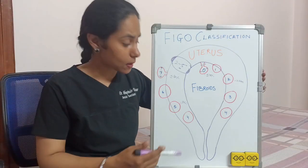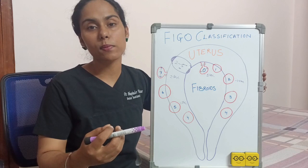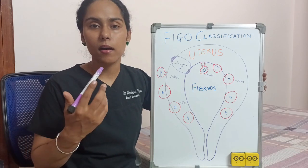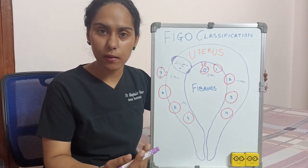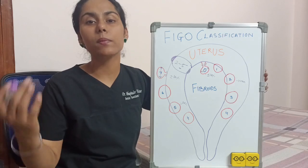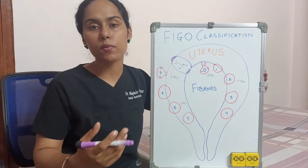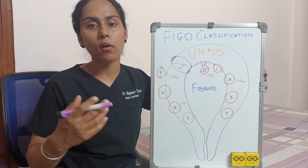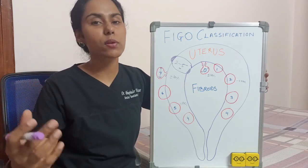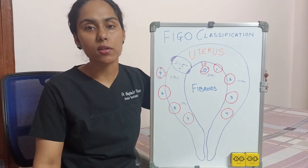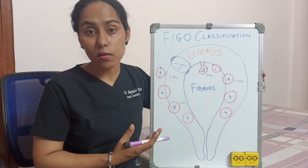For the subserosal component of fibroids, the patient is going to experience symptoms such as chronic pelvic pain or pressure symptoms — such as pressure on the rectum or urinary bladder causing increased frequency of micturition — and it can also cause dysmenorrhea.